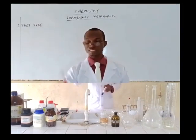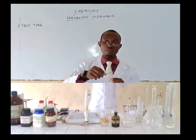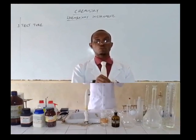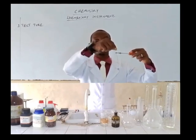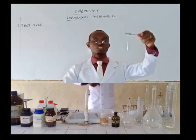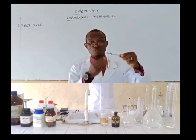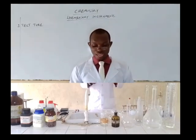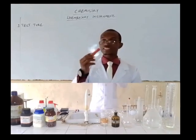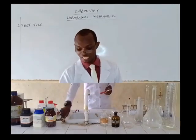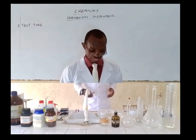To use our test tube effectively, there is what we call the test tube holder. We use it to hold our test tube, preventing whatever chemical you are working on from pouring on you. In case you have to pour some corrosive chemicals into the test tube, you use the test tube holder to hold it, preventing the chemical from spilling or splashing on you. These test tube holders are of different types — one has a plastic or rubber handle, while another type has wooden handles.